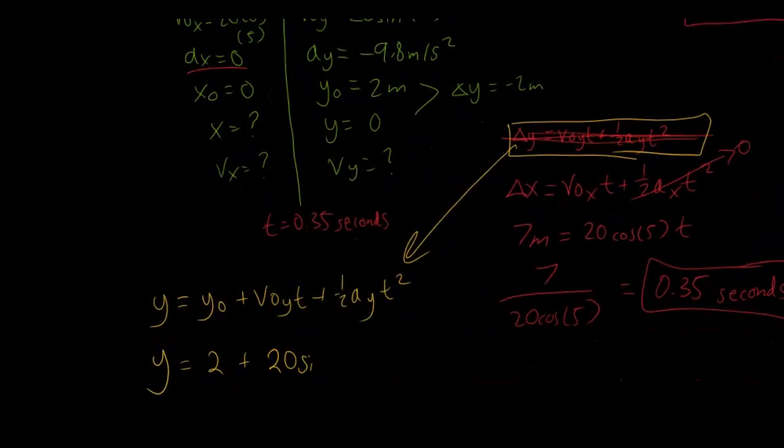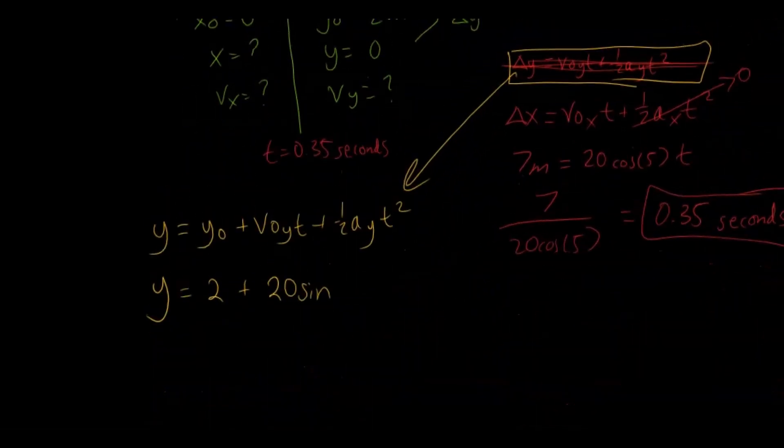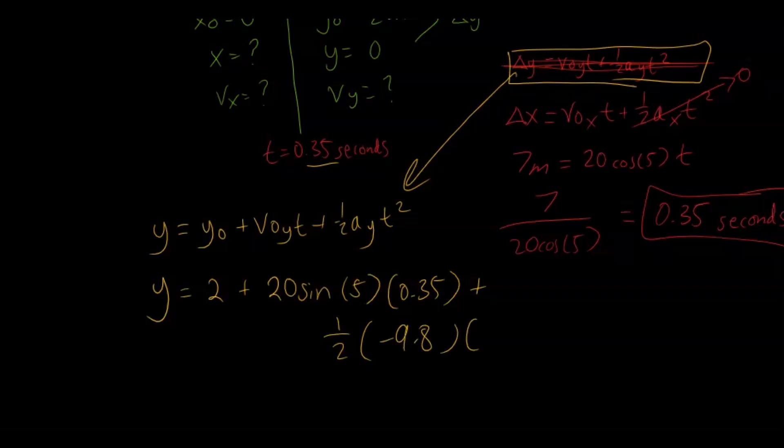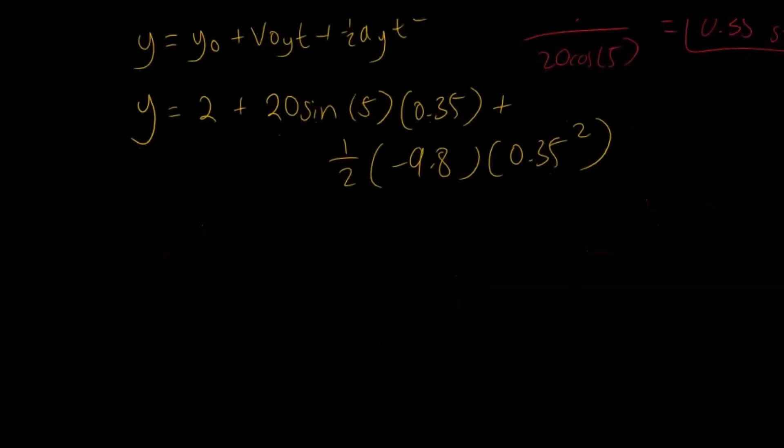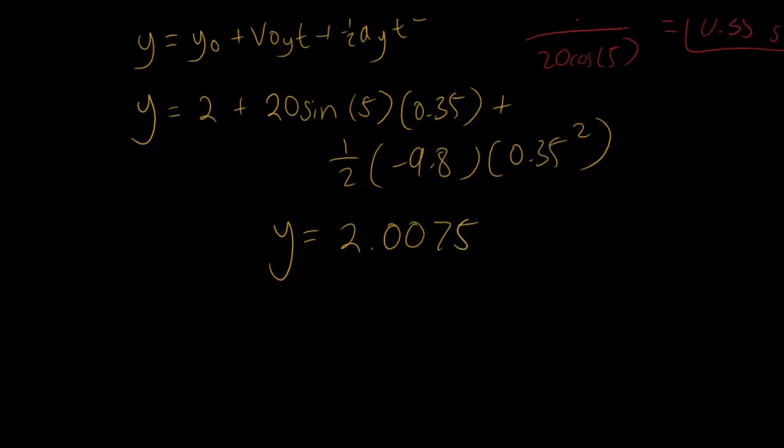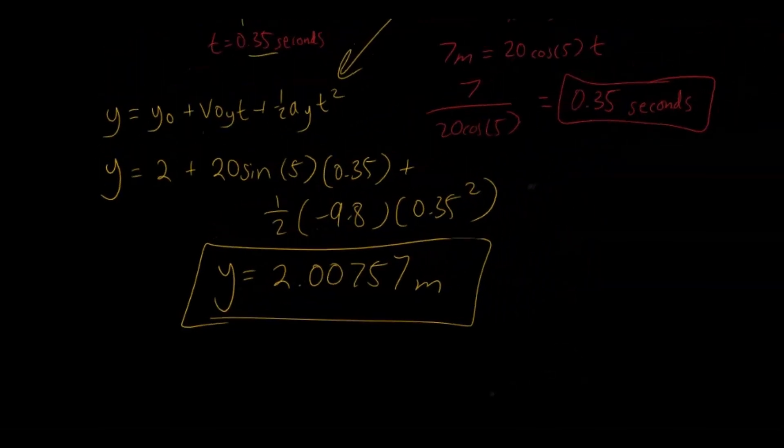So what you're finding is the final position, and the initial position is 2 plus, and then we have the initial velocity in the y direction, which up there says 20 times sine 5. And then multiply this by the time. Time is 0.35. Now we want to add this other part, 1 half, acceleration in the y, and time squared. And doing all this would give us a final position value equivalent to 2.00757 meters. So this is the final position.